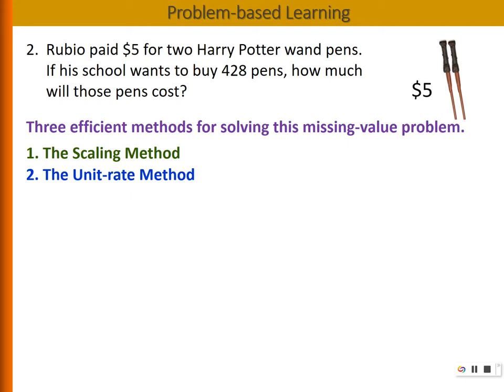And in school, most students actually learn to set up a proportion method. So for example, we could set it up as 5 divided by 2 equals x divided by 428.